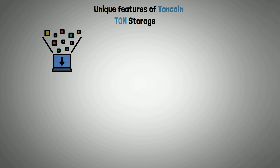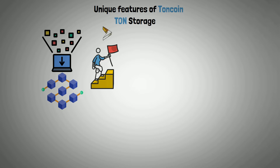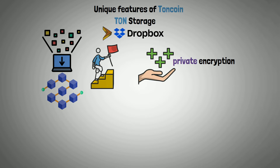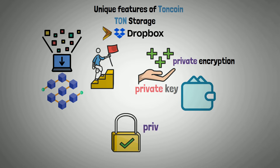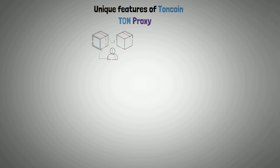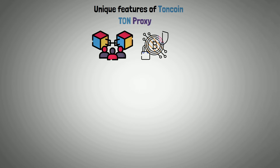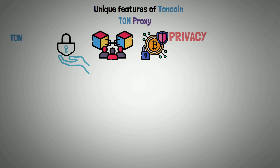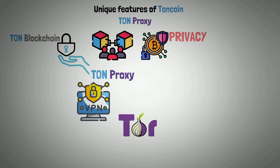Let's present the unique features of TAN Coin. TAN Storage: the idea of storing data on a blockchain is not new, but TAN Storage goes one step further. It functions very similarly to Dropbox, but provides the advantages of private encryption by using the private key from the owner's wallet. This increases security for both private and public online storage. TAN Proxy: blockchain users always place a high priority on privacy. Users can access the TAN blockchain through TAN Proxy by using decentralized VPNs and Tor-like networks.